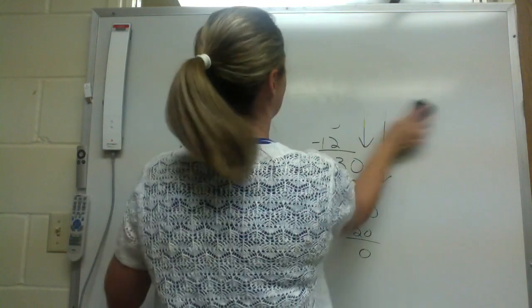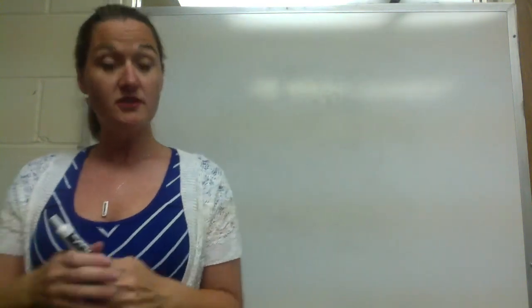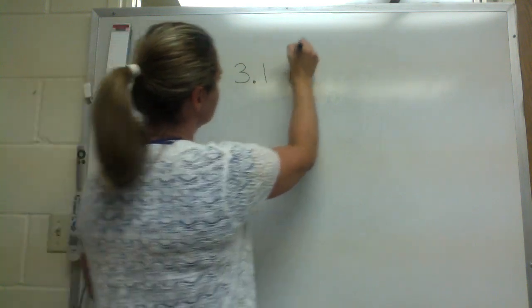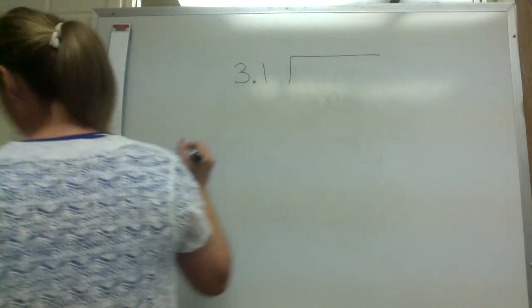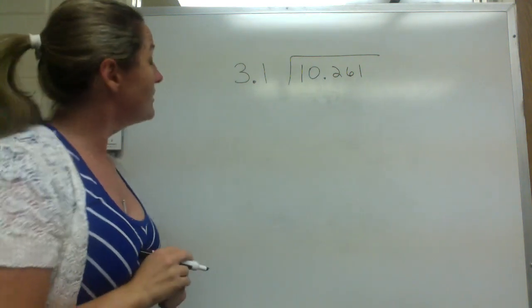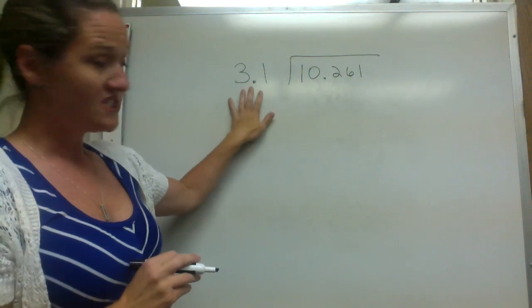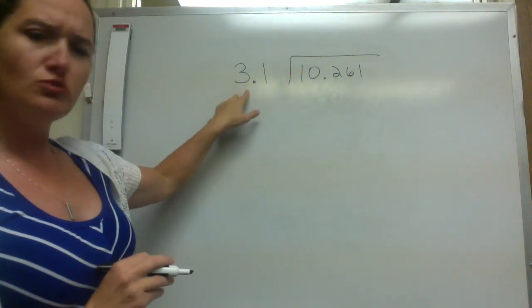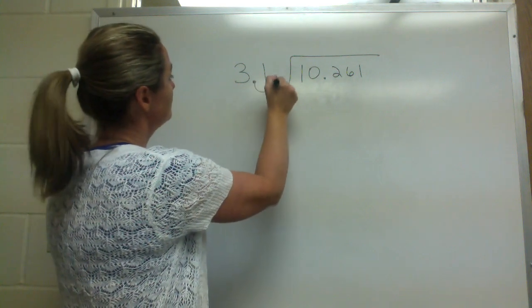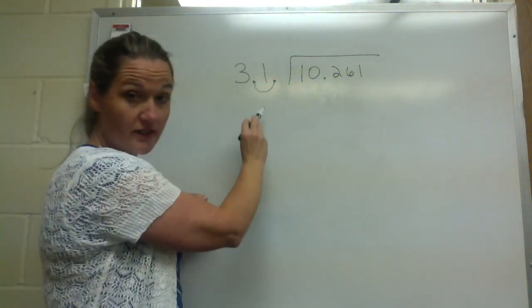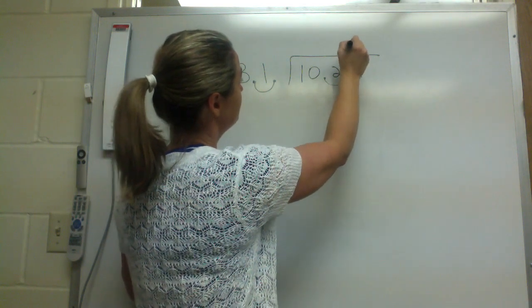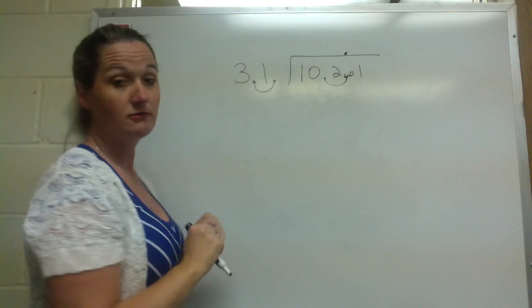So let's try decimals in both the dividend and the divisor. Let's do 3.1 going into 10.261. Lots of numbers behind the decimal. There's a decimal in the divisor — we have to move it to the very end. So pick it up, move it — here's my decimal there. And if I do it here, I have to do the same thing in the dividend: pick it up, move it over. This is where my decimal is now — I'm going to bring it straight up. Now I'm just going to work it out.